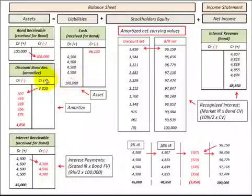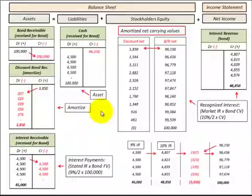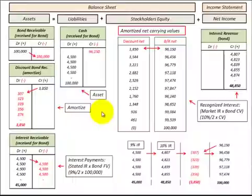In review, this discount on bonds receivable was a balancing entry to the bonds receivable account and the cash account, and also a balancing entry between the interest receivable and the interest revenue account. That's a summary of our journal entries on the balance sheet and income statement for the discount on bonds receivable that we originally purchased at a discount.